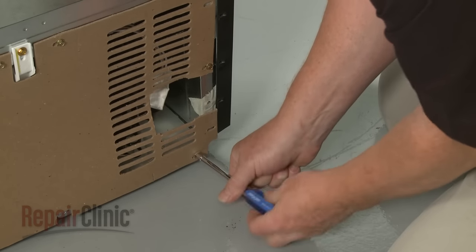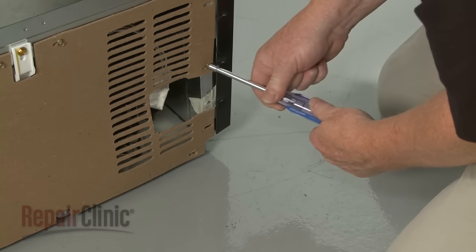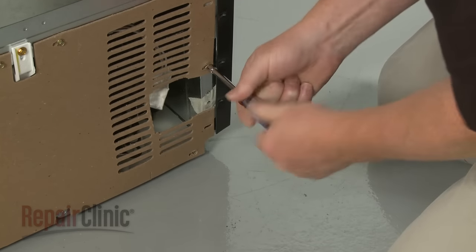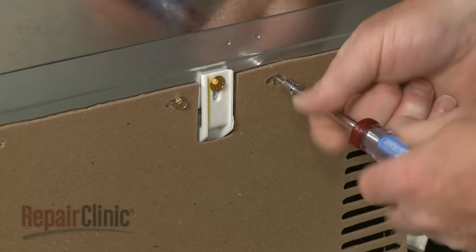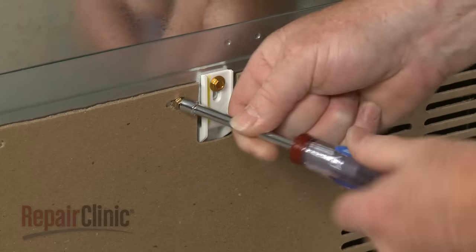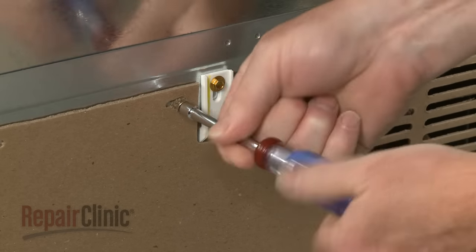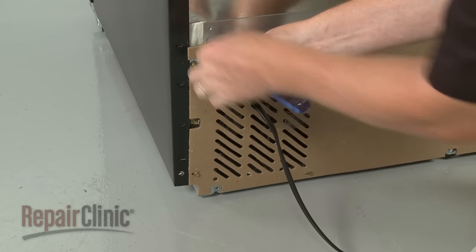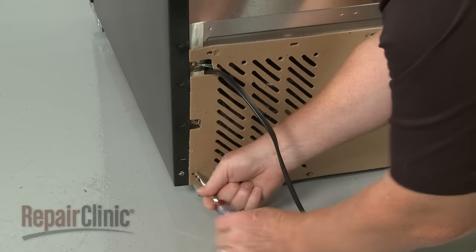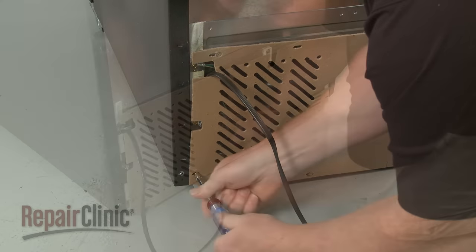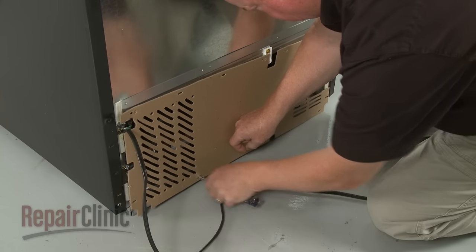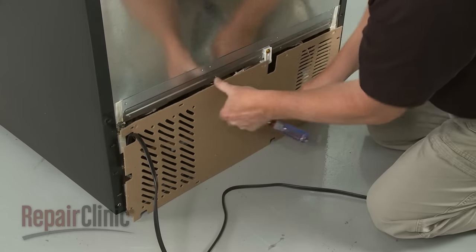Unthread the screws securing the lower rear access panel or, if applicable to your model, the single screw securing the small access cover. Set the panel or cover aside.